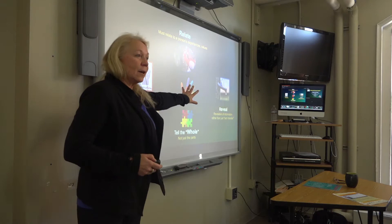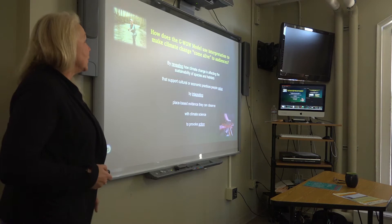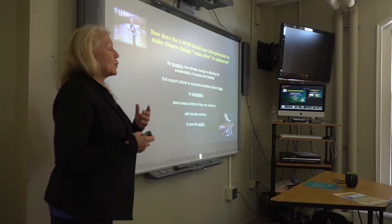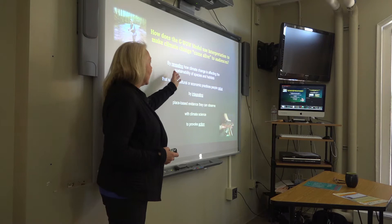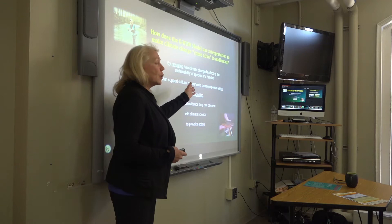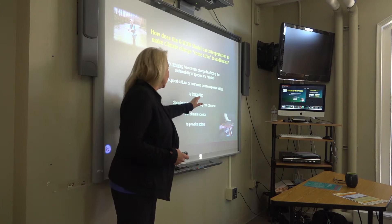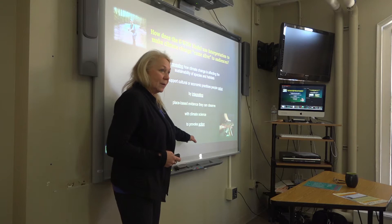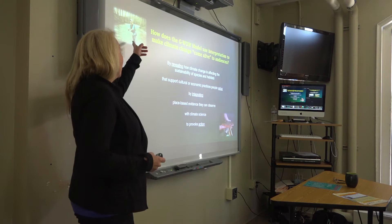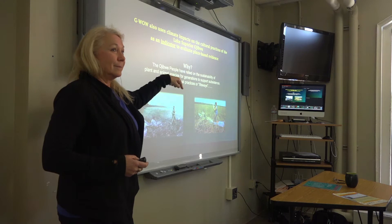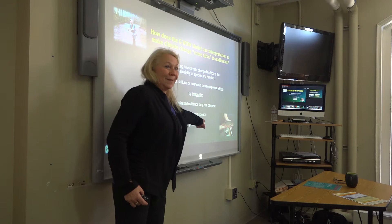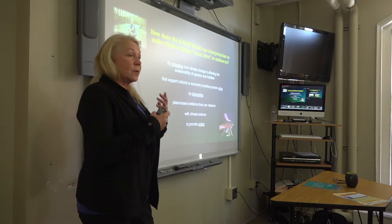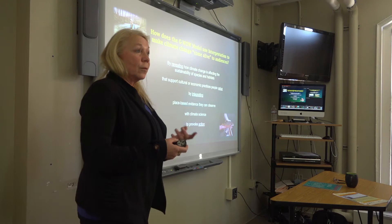How does this work for our G-WOW climate model? By revealing how climate change is affecting the sustainability of species and habitats that support cultural practices people value — that resonates with them. By integrating, telling the whole, place-based evidence they can observe with climate science to provoke action. See the elements of interpretation in there? The cultural practice of fly fishing depends on the sustainability of brook trout. We can talk to people about what they're observing — their creel amounts, water temperatures — more fish, less fish. We look at what the species needs: cold, clear water.